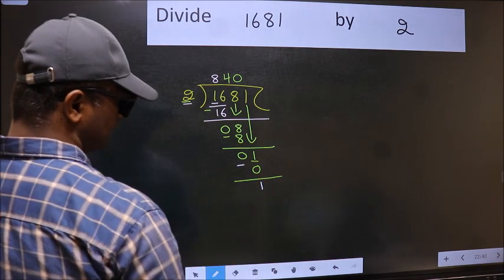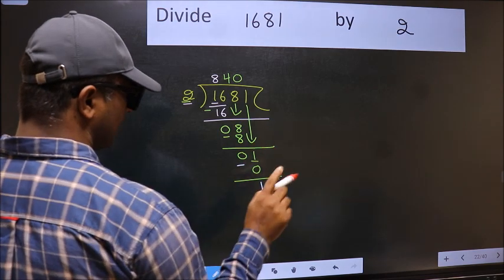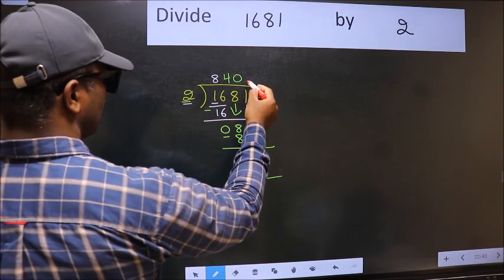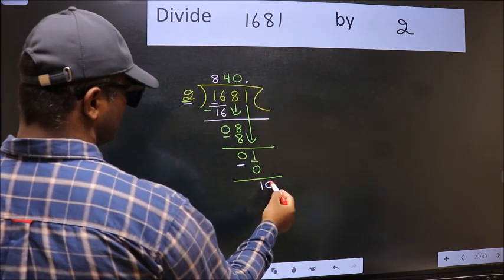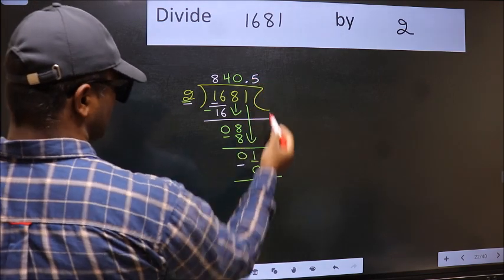We get 1. Over here we did not bring any number down, and 1 is smaller than 2. So now we can put dot and take 0. So 10. When do we get 10 in 2 table? 2 times 5 is 10.